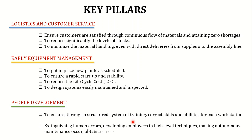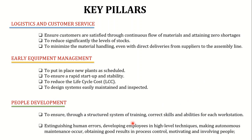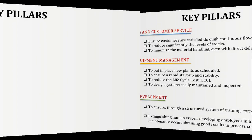The ninth pillar is People Development: ensuring that through a structured training system, employees have the correct skills and abilities for each workstation, eliminating human errors, developing high-level techniques, enabling autonomous maintenance, obtaining good results in process control, and motivating and involving employees.